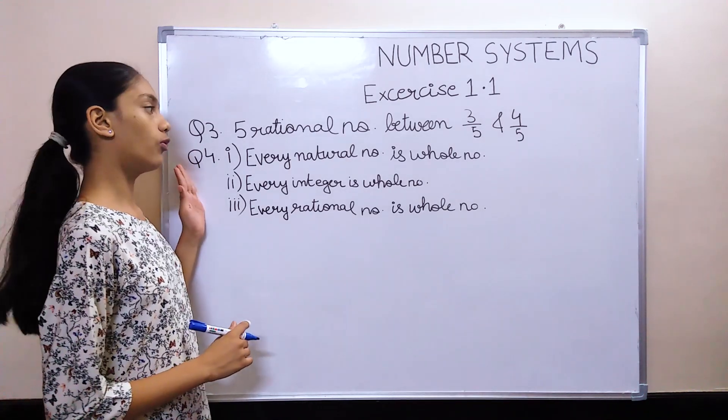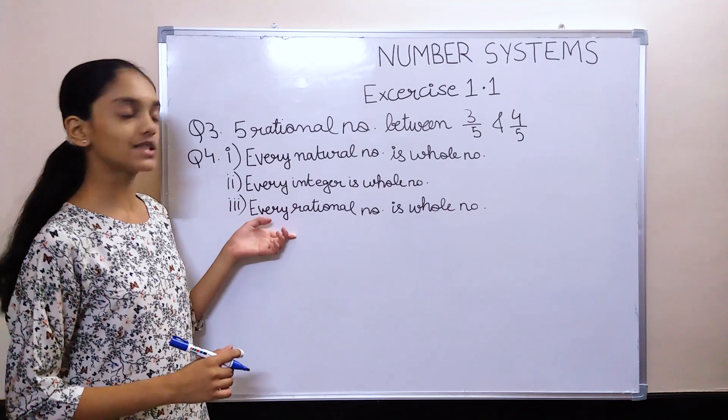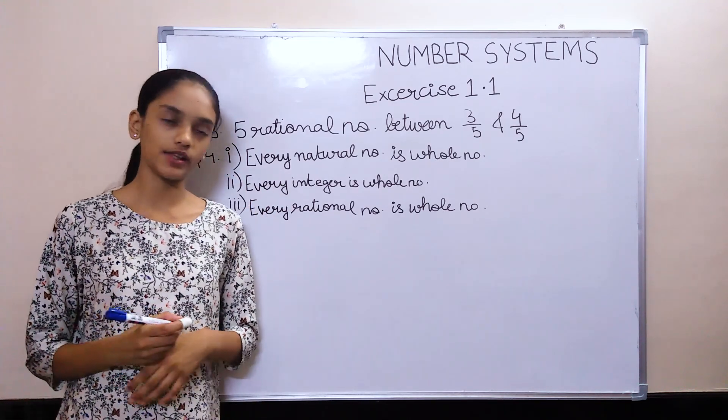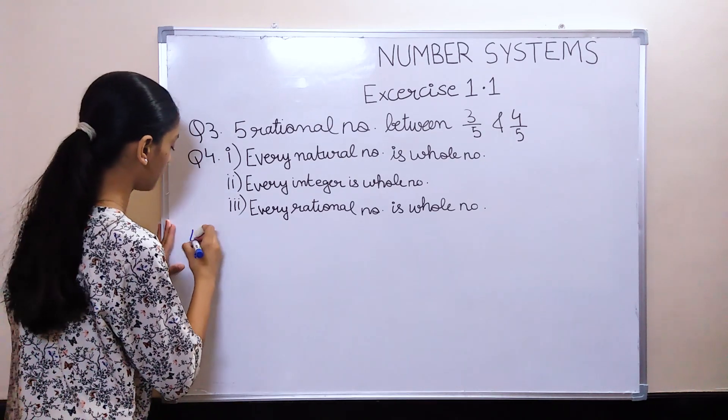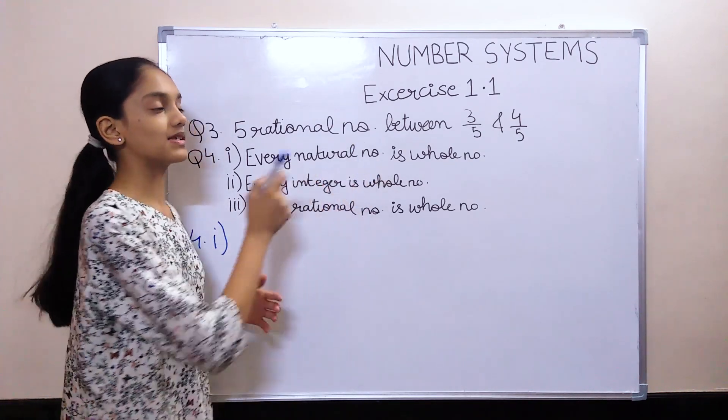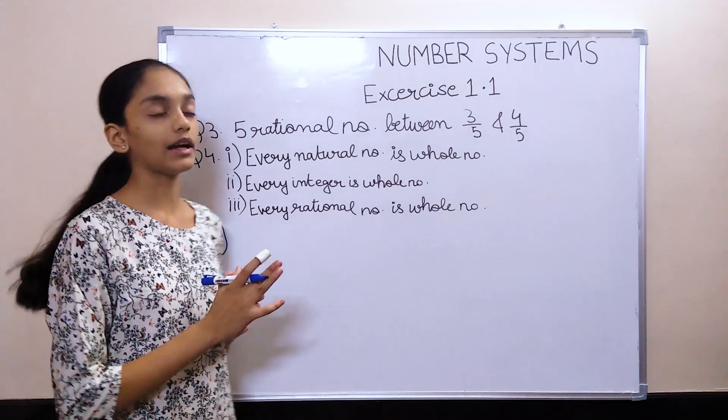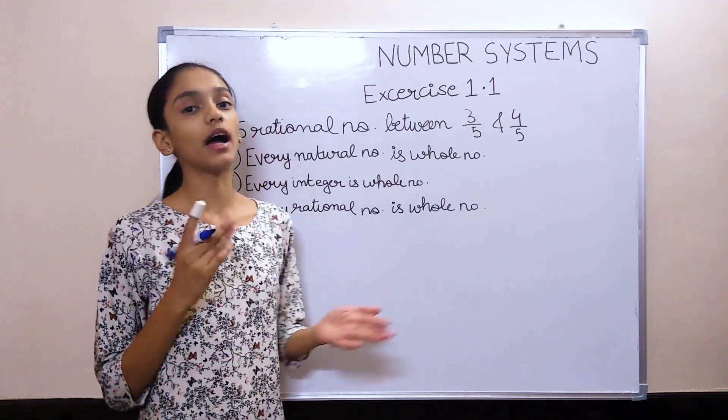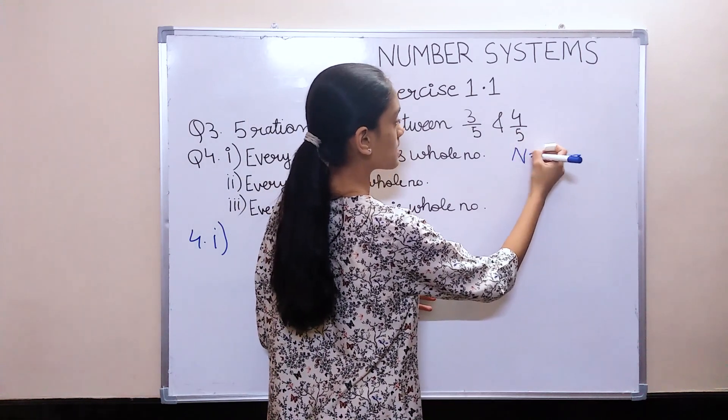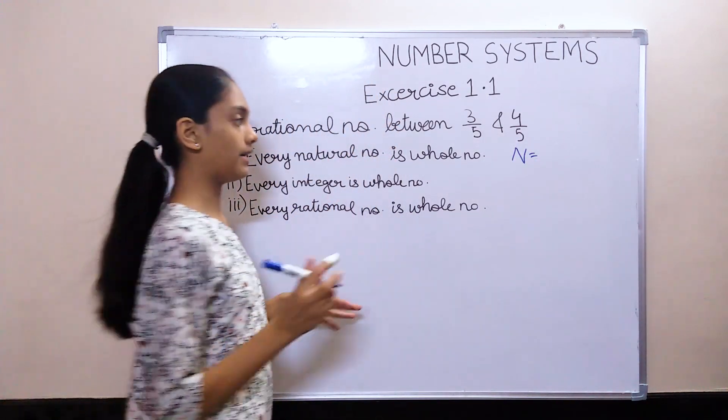Now let's move on to question number 4. Here we have been given statements and we need to prove them true or false and give reason for the same. First one, every natural number is a whole number. For that you need to know what is a natural number and what is a whole number. Natural numbers are numbers from 1 to infinite.